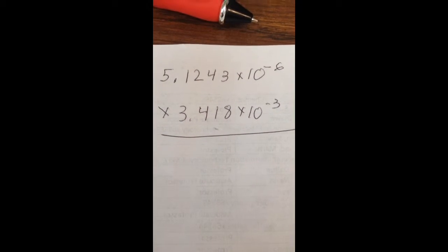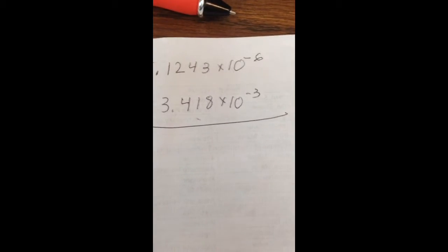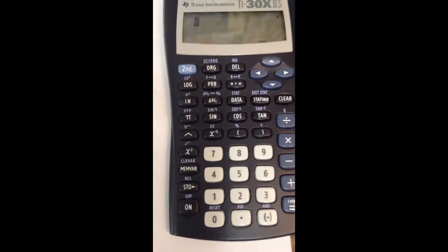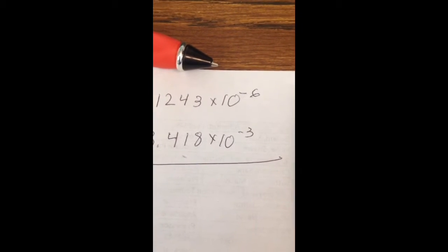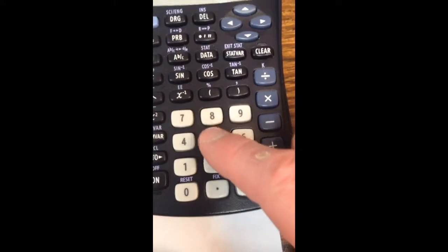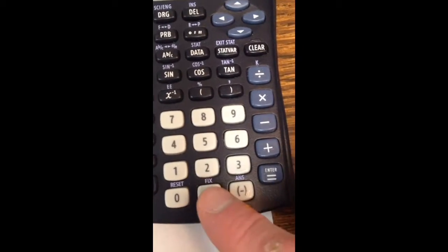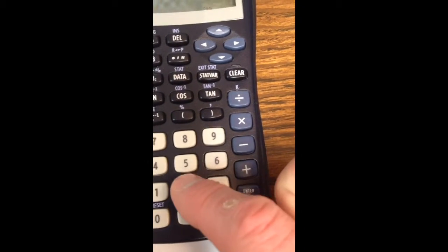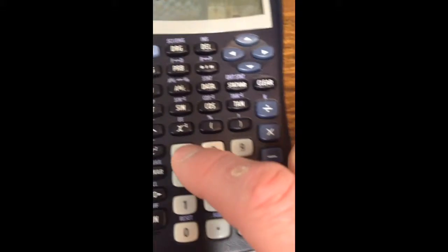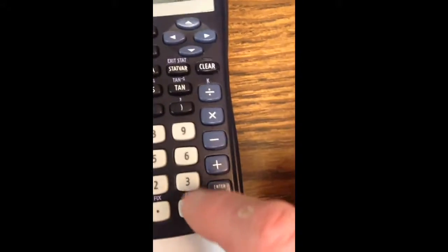All right, how would you put that into your calculator? I have your handy-dandy course-approved calculator right here. So let's start by putting our 5.1243 times 10 to the negative 6 into our calculator. So I'm going to come over here and I'm going to hit 5.1243.